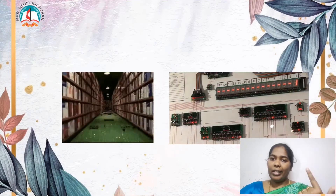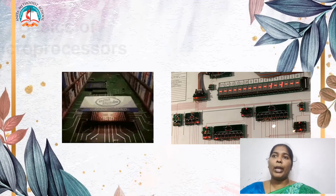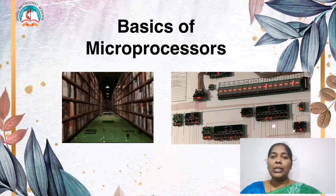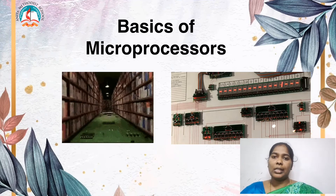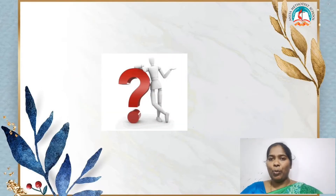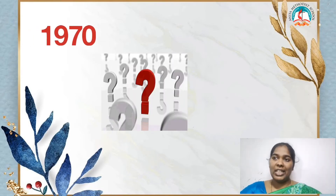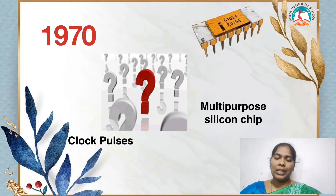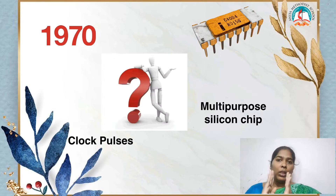Now we learned about architecture and organization. Next we will see some basics of microprocessors. What is a microprocessor? The microprocessor, which is the CPU, plays a very important role to perform all tasks. The first microprocessor was introduced in 1970 and it is a multi-purpose silicon chip driven by clock pulses. One example is the 4004 microprocessor — it has four input pins and four output pins and both can work at the same time, making it a four-bit microprocessor.